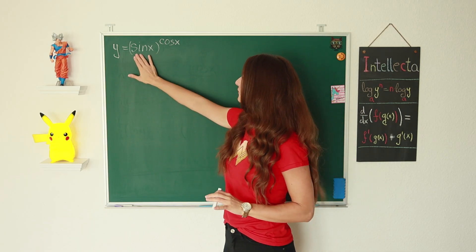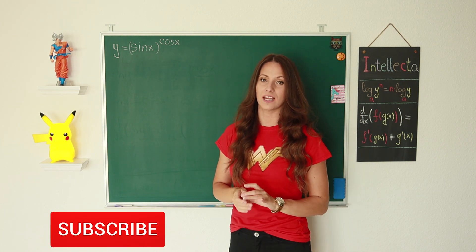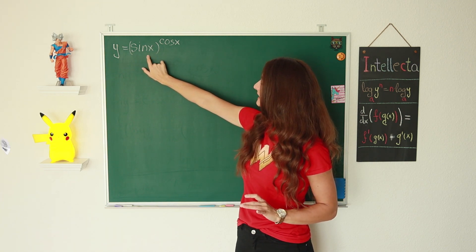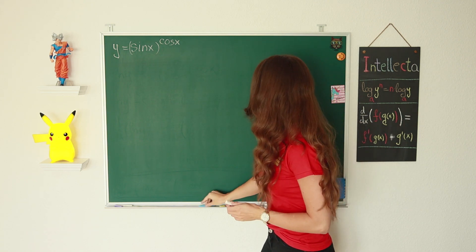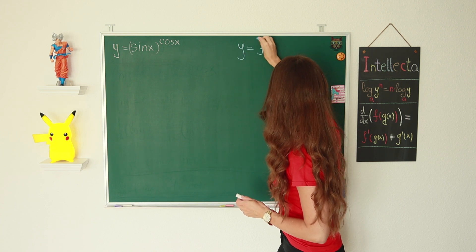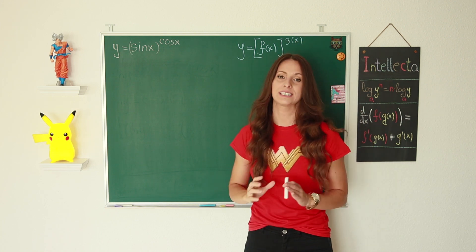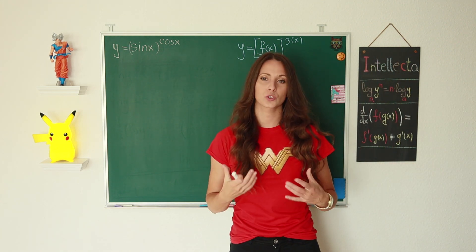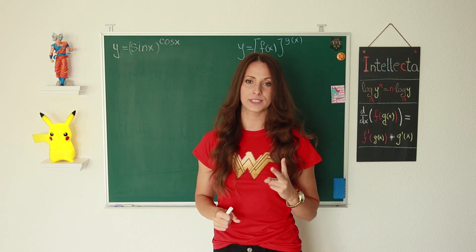So we have y equals sine x to the cosine of x and we want to find the derivative. Every time when you have two functions where one function is in the base and the second one is the exponent — that is, every time when you have the form y equals f(x) to the g(x) — and you want to find the derivative, then you should apply the logarithmic differentiation.